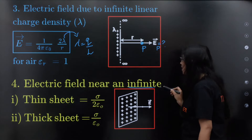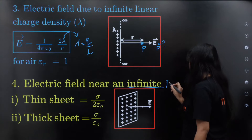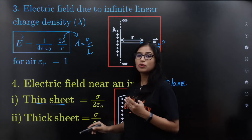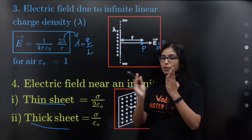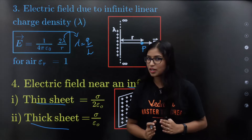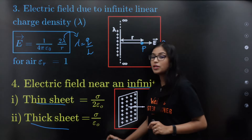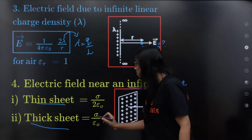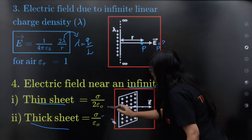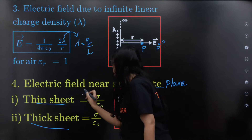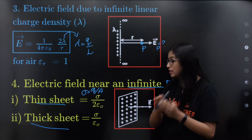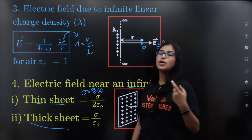Electric field near an infinite long sheet — infinite plane sheet. For a thin sheet: E equals sigma divided by 2 epsilon naught. For a thick sheet or two parallel sheets: E equals sigma divided by epsilon naught. Sigma is equal to q divided by area.